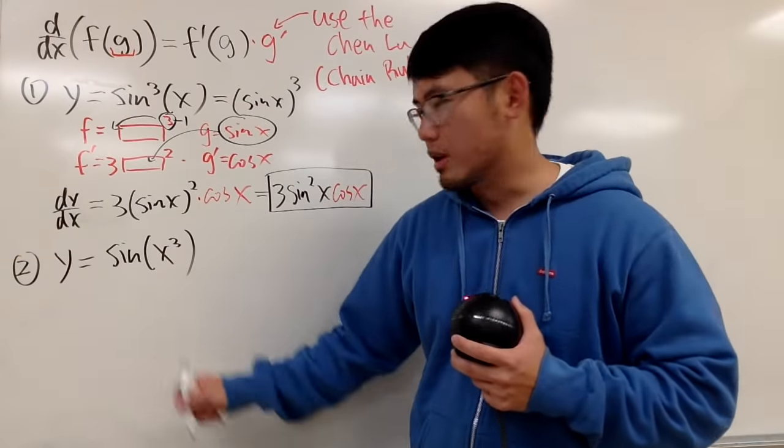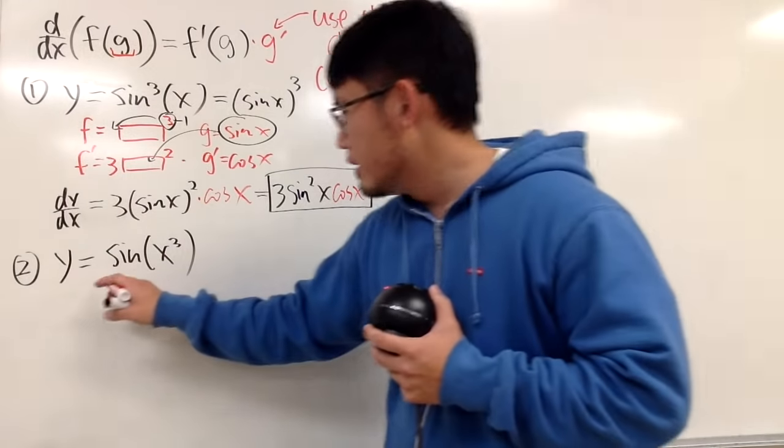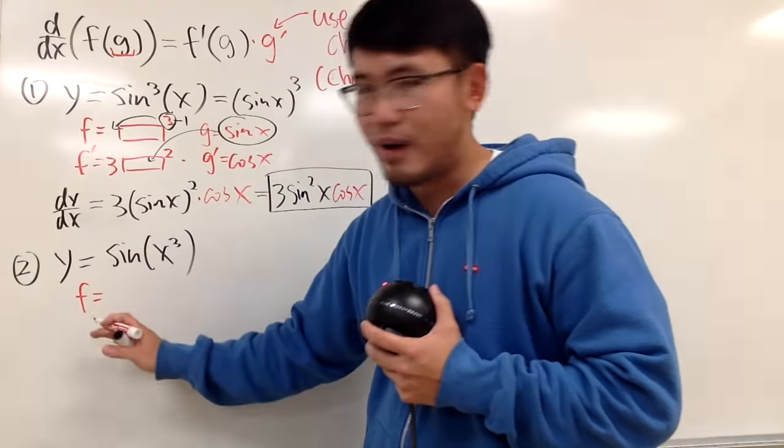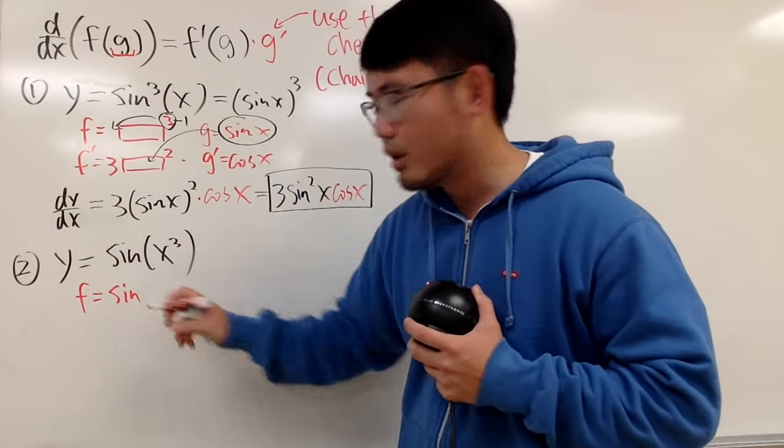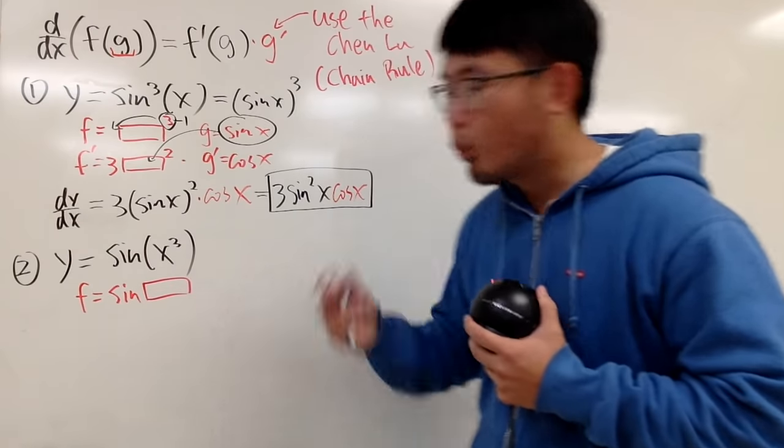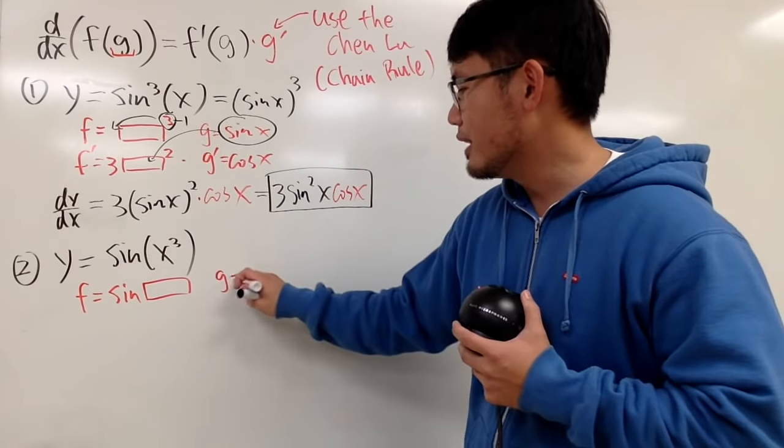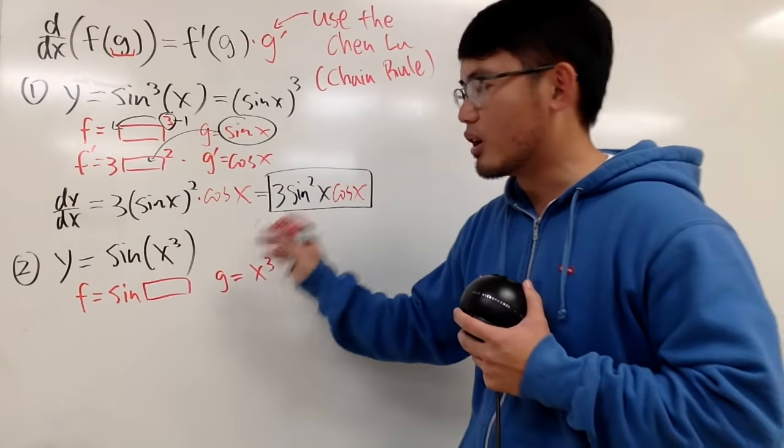So let's see this one right here. When you have sin of x to the third power instead, if you look at the big picture, the outer function is sin of something. So we have sin of, yes, a box. And what is a box? What's inside of the box? Well, the g function, in our case, is x to the third power.